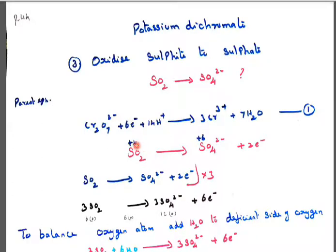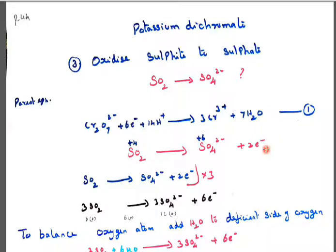In SO₄²⁻, oxygen is 4, so 4 into minus 2 is minus 8. With the charge of minus 2, it becomes plus 6. So the oxidation state of sulphur in SO₄²⁻ is plus 6. So plus 4 and plus 6 — find the difference: 2. We should put 2 electrons on the higher oxidation number side. Here we have 2 electrons, but in the parent equation we have 6 electrons.